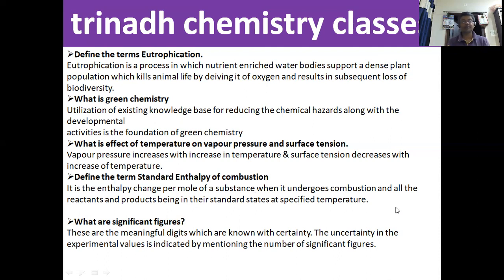What are extensive properties and what are intensive properties? Extensive properties are the properties which depend on the mass of the substance. Examples are mass, volume, internal energy, and enthalpy. Intensive properties are the properties which do not depend on the mass of the substance. Examples are temperature, pressure, and density.